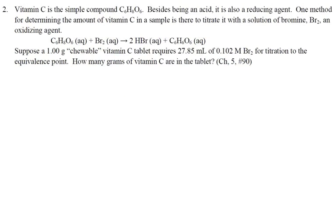Number 2. Vitamin C is a simple compound. Besides being an acid, it's also a reducing agent — that's what makes it an antioxidant. One method for determining its amount is to mix it with bromine. Suppose a 1-gram chewable vitamin C tablet requires 27.85 milliliters of 0.102 molar bromine solution for titration to the equivalence point. How many grams of vitamin C are in the tablet? This is very similar to the one before.